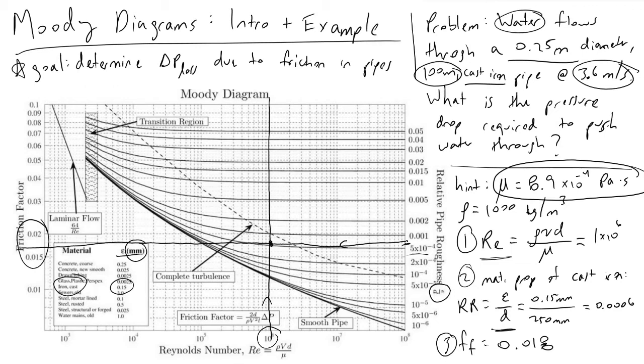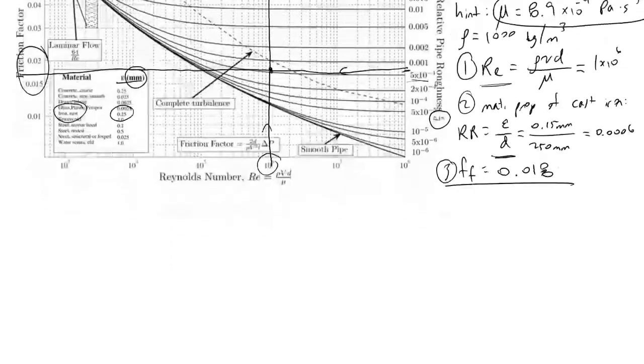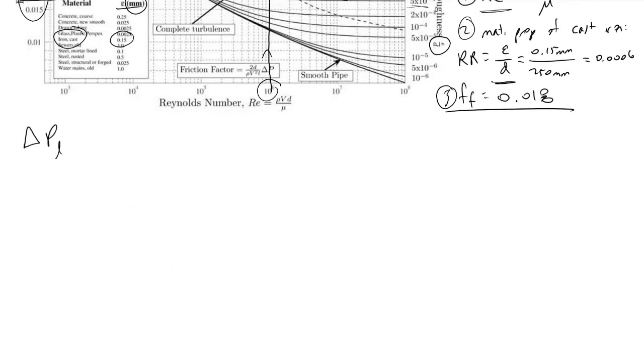Friction factor defined, we now know with the friction factor we can determine what our pressure loss will be. Delta P loss is equivalent to your friction factor times the length of your pipe divided by your diameter of your pipe times one half times the density of your fluid times the velocity of your fluid squared. If you plug in the numbers, we will arrive at a value of 93 kilopascals.